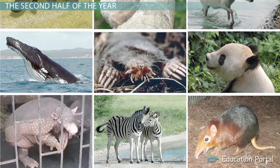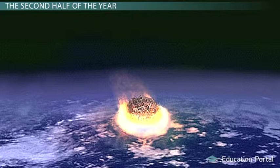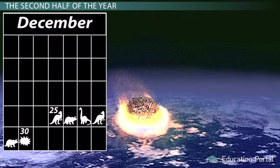The asteroid impact that kills the dinosaurs is like December 30th on our calendar, or only 65 million years ago.